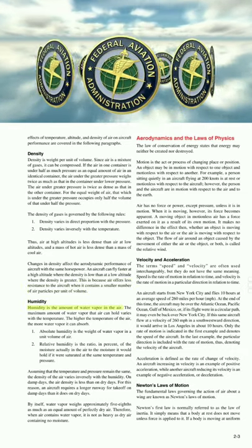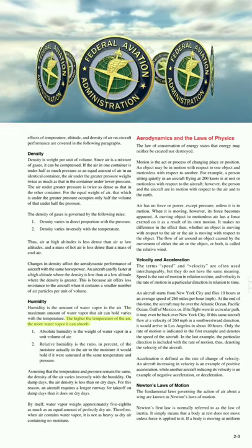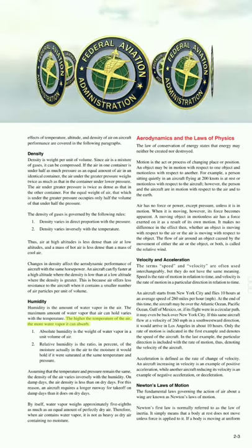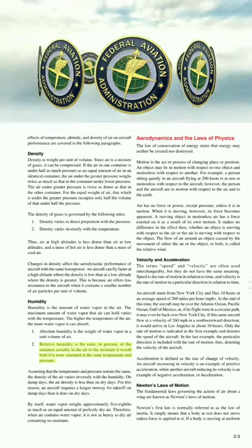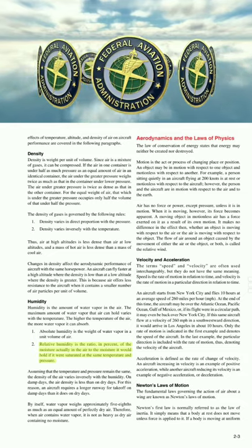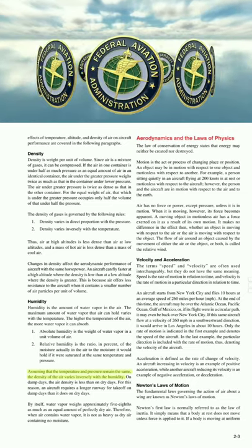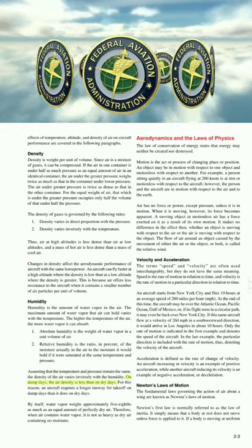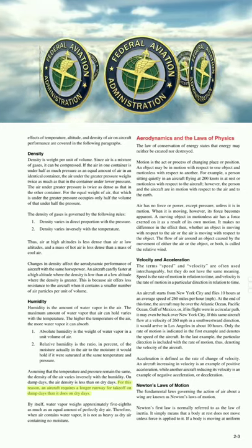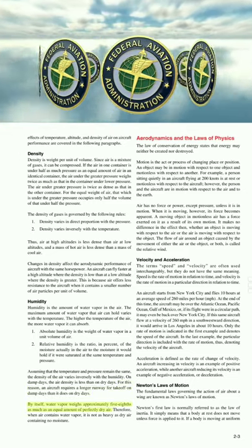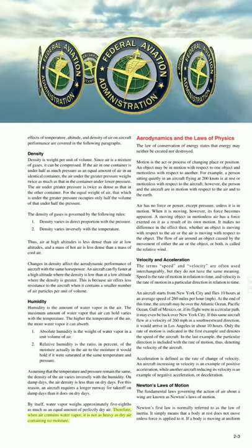Humidity is the amount of water vapor in the air. The maximum amount of water vapor that air can hold varies with the temperature; the higher the temperature, the more water vapor it can absorb. Absolute humidity is the weight of water vapor in a unit volume of air. Relative humidity is the ratio, in percent, of the moisture actually in the air to the moisture it would hold if saturated at the same temperature and pressure. Assuming temperature and pressure remain the same, the density of the air varies inversely with the humidity. On damp days, air density is less than on dry days. For this reason, an aircraft requires a longer runway for takeoff on damp days. Water vapor weighs approximately five-eighths as much as an equal amount of dry air, so when air contains water vapor, it is not as heavy as dry air.